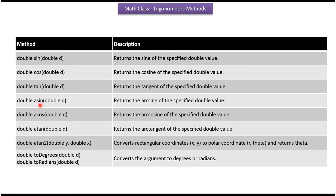Asin method returns the arcsine of the specified double value. Acos method returns arc cosine of the specified double value. Atan method returns arc tangent of the specified double value.